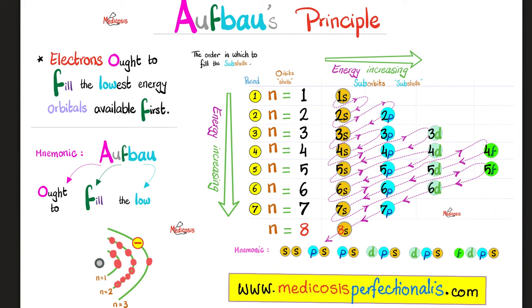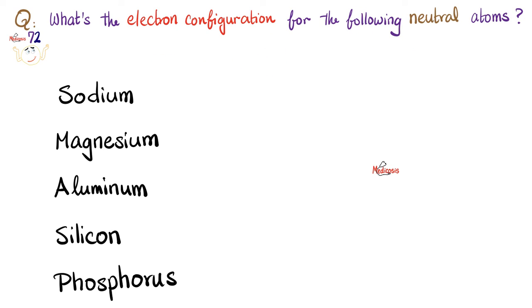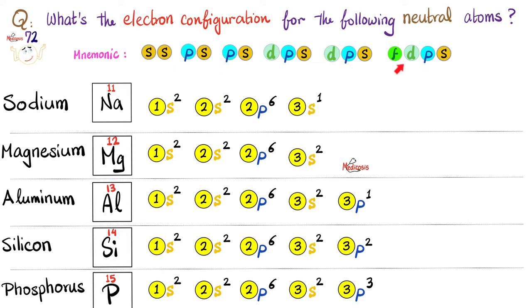By the way, you can download these notes in pdf files at medicosisperfectionalis.com. Let me help you by answering the question of the previous video. What's the electron configuration for the following neutral atoms? Please pause and try to answer them yourself. What's the first order of business? My crazy mnemonic. S, S. P S, P S. D P S, D P S. F, D P S. As in F me. You gotta end up with the F. Gotta end up on a high note. So let's go sodium. How many electrons does the neutral atom of sodium have? Answer, 11. So I need to fill up 11 electrons. Follow the mnemonic. S, S. So 1s2, 2s2. After you finish S, S, you go P, S, P, S. All right? 2p6, and then 3s1. Let's add all of them. 2 plus 2 is 4, plus 6 is 10, plus 1 is 11. Bingo.